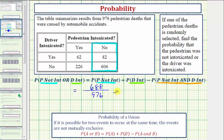Then we have plus the probability that the driver was intoxicated. Notice how this row here indicates the number of drivers that were intoxicated. Therefore the probability that the driver was intoxicated would be equal to 62 plus 82, which is 144, divided by 976.